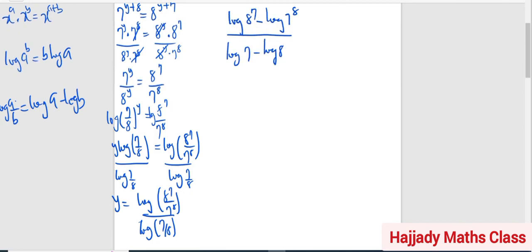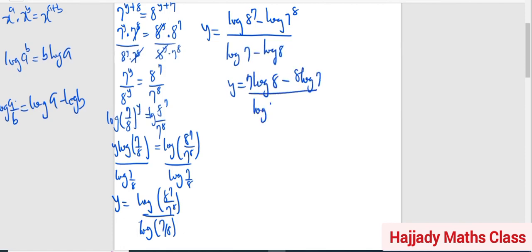That is what my value of y equals. And from here, we can apply the same law that says log a raised to the power b is the same thing as b log a. So my y will be equal to: 7 log 8 minus 8 log 7, over log 7 minus log 8.